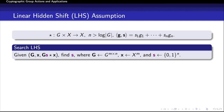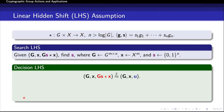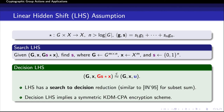An interesting property of the LHS problem is that it has a search-to-decision reduction, meaning that given a distinguisher against the decision problem, we can find the binary vector S. The reduction is inspired by the search-to-decision reduction of Impagliazzo and Naor for knapsack functions. Finally, as we saw in the overview, the LHS assumption can be used to construct a symmetric KDM-secure encryption scheme, which in conjunction with PKE implies other primitives such as designated-verifier NIZKs. The construction follows the blueprint of the DDH-based scheme of Boneh et al. from 2008.